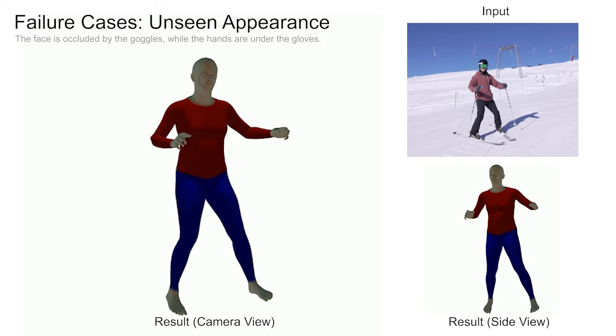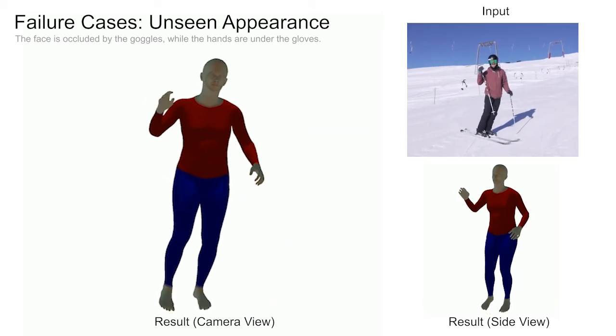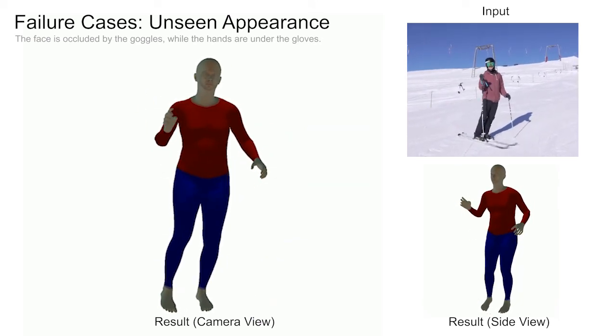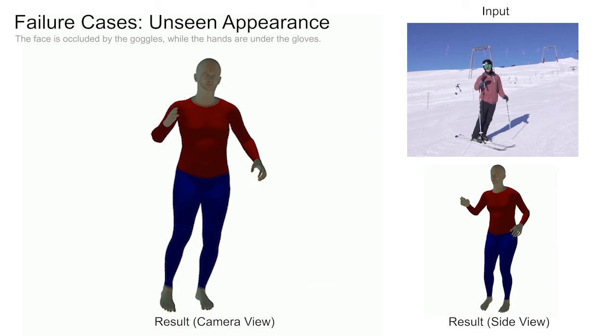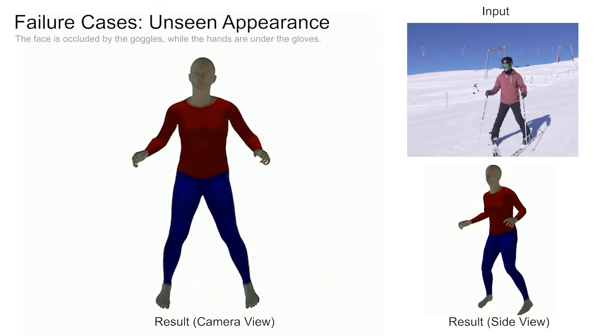In the following case, our method fails to estimate the face color and the hand poses very well. This is because the appearance of the face and hands are not seen in the training data.